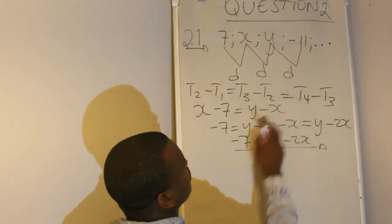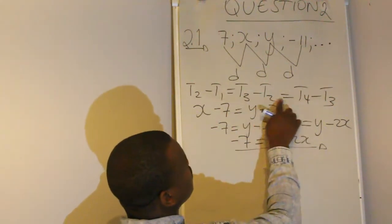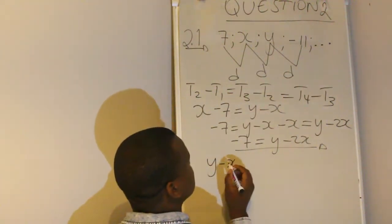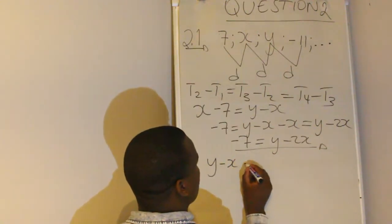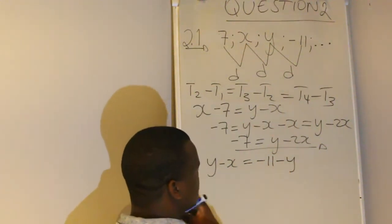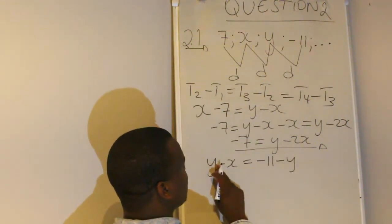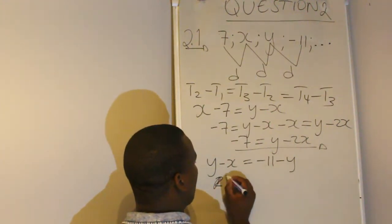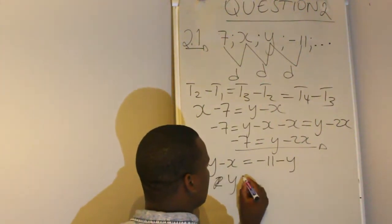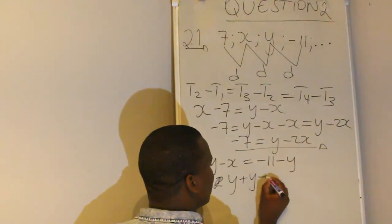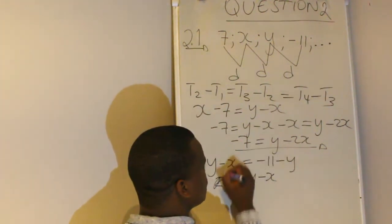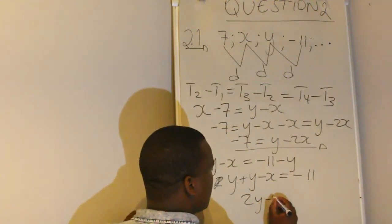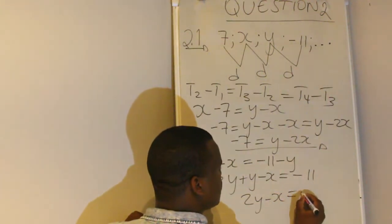Then you do the same thing for the next pair of terms. Term 3 minus term 2 equals term 4 minus term 3, so y minus x is equal to negative 11 minus y. Transposing the y to this side gives you y plus y, so 2y minus x is equal to negative 11.